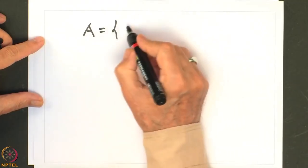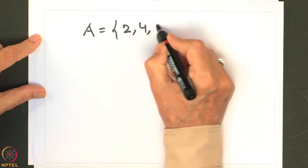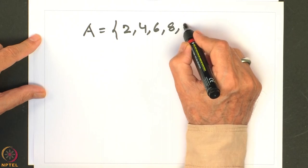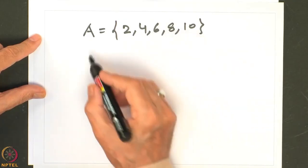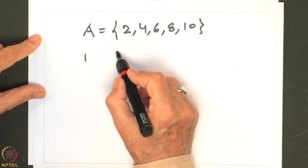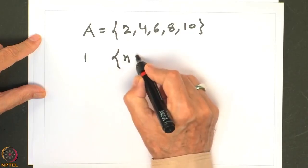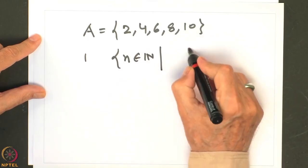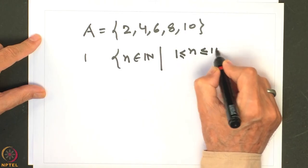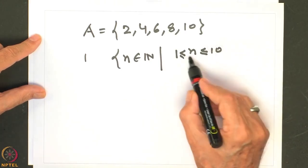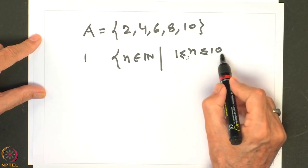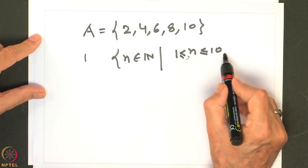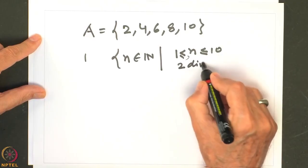Let us look at the set A = {2, 4, 6, 8, 10}. This is an explicit description of a set. We can also write it as all n, a natural number, such that n is between 1 and 10 (i.e., 1 ≤ n ≤ 10) and 2 divides n. So there are two parts to the rule: n is between 1 and 10, and n is divisible by 2.